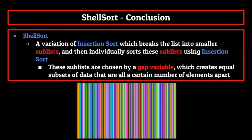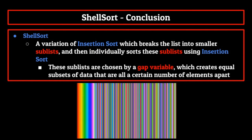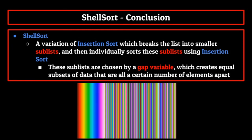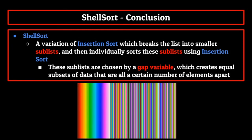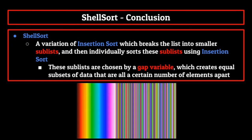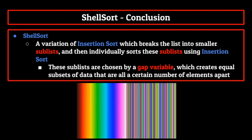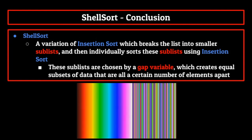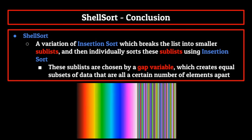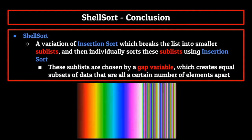And with that concludes our discussion on shell sort. As a review, shell sort is a variation of insertion sort which breaks the list into smaller sublists, which are then individually sorted using insertion sort. These sublists are chosen by a gap variable, which creates subsets of items that are all a certain number of elements apart. As always, if you are confused about any part of this video, please use the timestamps in the description below to go back and rewatch any particular segment, or leave a comment down below with your question. Next week we will move into the final phase of our sorting algorithm series, so make sure you stay tuned.